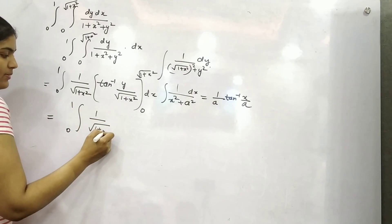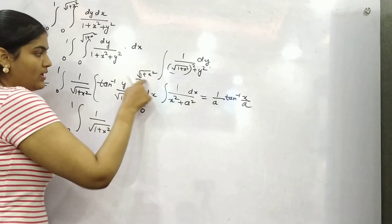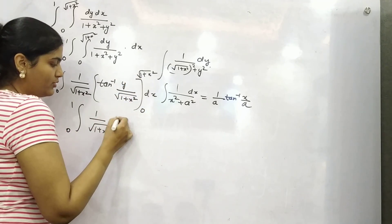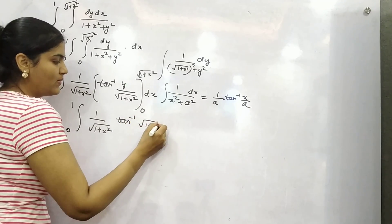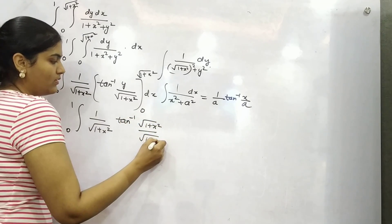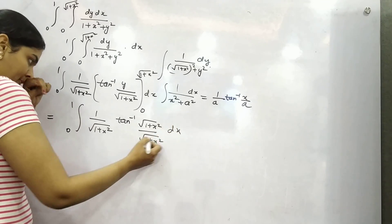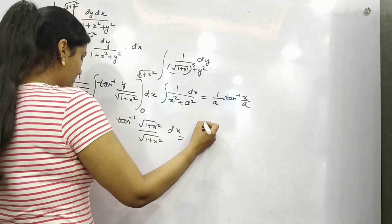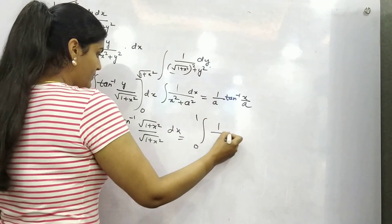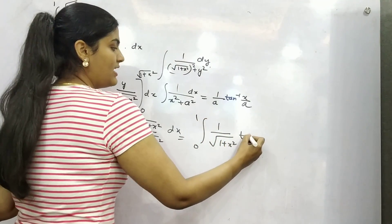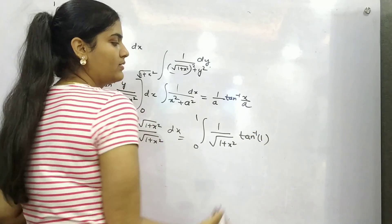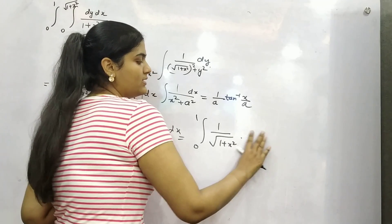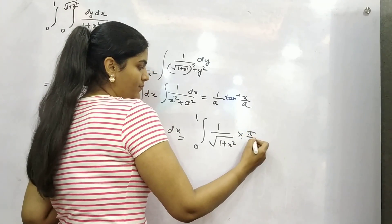Now if you put the limits: upper limit minus lower. Tan inverse of 0 will be 0. But if you put the upper limit, which is root 1 plus x square, this cancels, so you get tan inverse 1. And tan inverse 1 is pi by 4, because tan of pi by 4 is 1, and tan is cancelled with tan inverse. So it becomes pi by 4 dx.